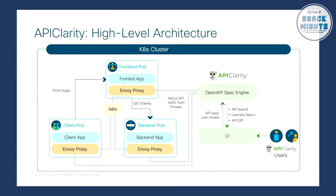These are all within microservices managed architectures — container-based apps running in Kubernetes. Varying flavors of Kubernetes can be supported. The demo I'm running uses something called K3D on my Mac. For any of the pods that are running, there is an Envoy proxy offered by the Istio service mesh that reports how that portion of the application is working and the interactions occurring. It feeds through those proxies to the OpenAPI spec engine and gives us information on how the APIs between these microservices are interacting with each other.